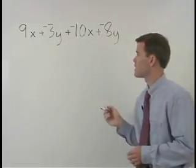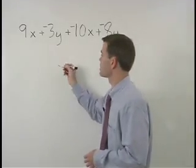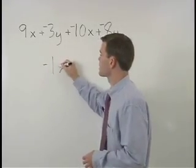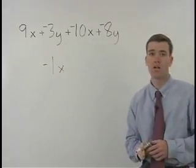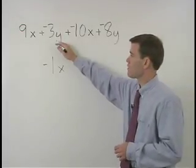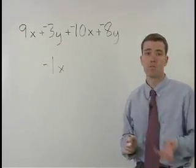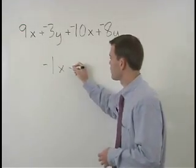9x plus negative 10x simplifies to negative 1x. Now let's combine our y terms. Negative 3y plus negative 8y simplifies to negative 11y.